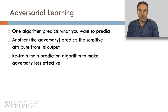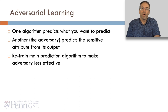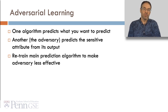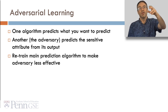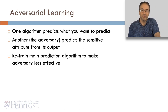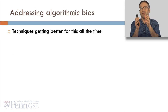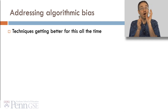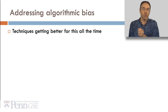Another approach is adversarial learning. In adversarial learning, one algorithm predicts what you want to predict, and another — called the adversary — tries to predict the sensitive attribute from the algorithm's output. You then retrain the main prediction algorithm to make the adversary less effective at figuring out the sensitive attribute from the output. The techniques for addressing algorithmic bias are getting better all the time, and I'm utterly certain I will be re-recording this video in the next edition of this course because it's changing so quickly. And that's a great thing.